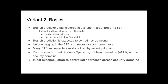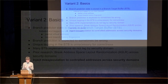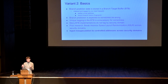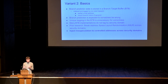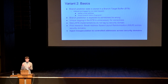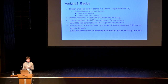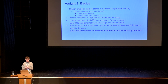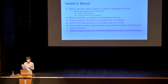Variant two: the basic idea is branch prediction in the processor can predict not just conditional jumps but also indirect calls — calls where the target instruction pointer comes from, for example, a memory location. This branch prediction uses a table called the branch target buffer, which on at least an Intel Haswell processor appears to be indexed and tagged by a partial virtual address and a fingerprint of recent branch history.